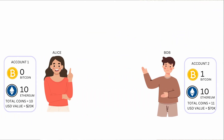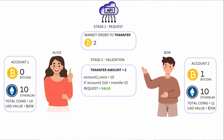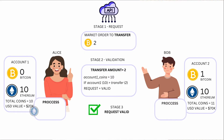So let's say Alice doesn't have any Bitcoin — she only has ten Ethereum — but she needs to send two Bitcoin to Bob. She doesn't have enough money, so she sniffs out the API endpoint of Coinbase, crafts her own API request, and says she wants to send two Bitcoin to Bob. The validation kicks in and checks: does Alice have two coins? And Alice does — she has ten. They're Ethereum, a different currency, but the system is checking how many coins she has, not what type. Therefore, the two Bitcoin are sent to Bob, and now Alice has eight Ethereum but has just sent a whole lot more value than that.